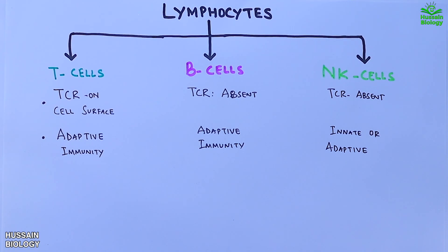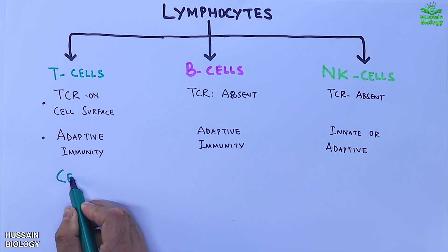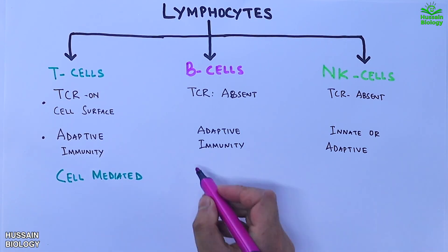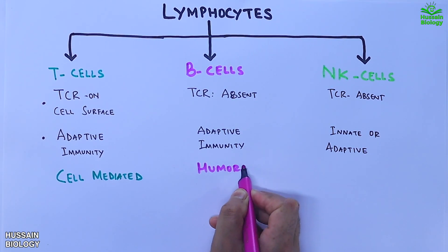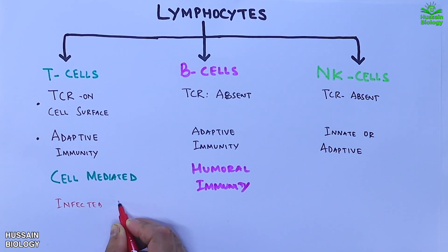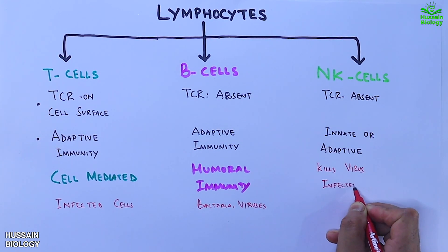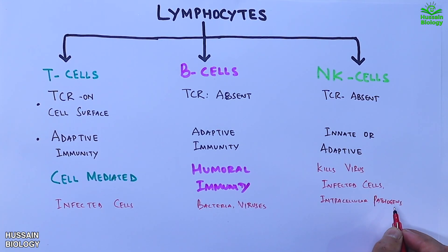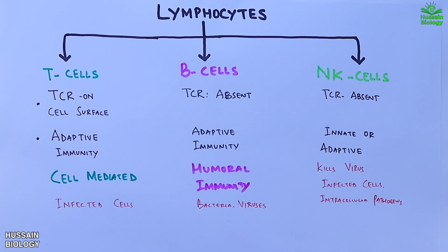In terms of immune responses, T cells mediate cell-mediated response, B cells mediate humoral response, and NK cells hold cytoplasmic granules containing perforin and granzymes involved in cell-mediated cytotoxicity. T cells target infected cells, B cells target bacteria and viruses, whereas NK cells kill viruses, pathogens in infected cells, and intracellular pathogens.